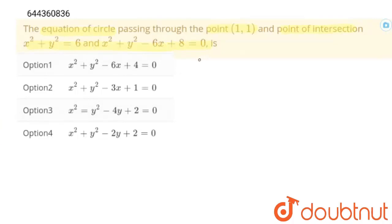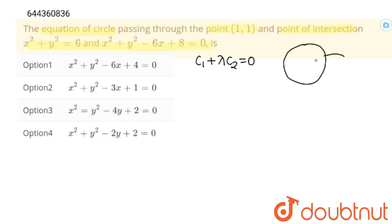We know that the equation of a circle passing through the point of intersection of two circles is C1 plus lambda C2 equals to 0. Suppose this is circle C1 and this is circle C2, and their points of intersection are A and B. From A and B, infinite circles can be drawn, and the equation of all those circles will be C1 plus lambda C2 equals to 0, where lambda is a variable.